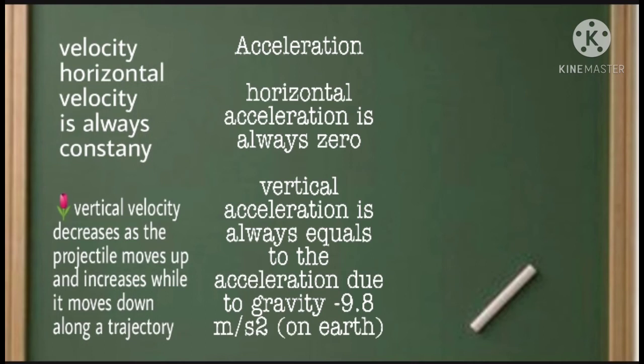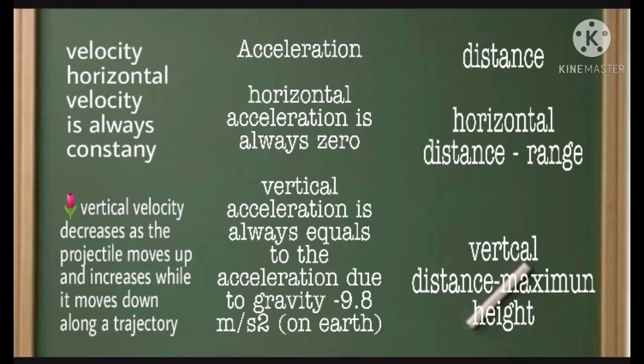In acceleration, horizontal acceleration is always zero. Vertical acceleration is always equals to the acceleration due to gravity which is 9.8 meters per second squared on Earth.